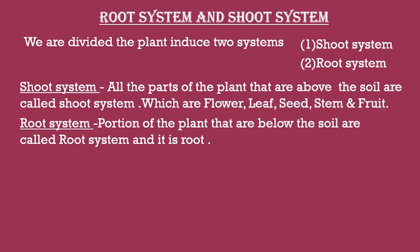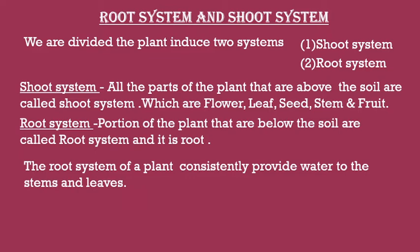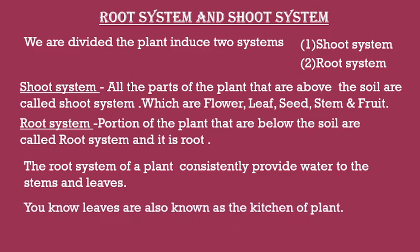Root system — the portion of the plant that is below the soil is called root system, and it is the root. The root system consistently provides water to the stem and leaves. (Paudhe ki jad pranali tana aur pattiyion ko lagatar paani pradan karti hai.)